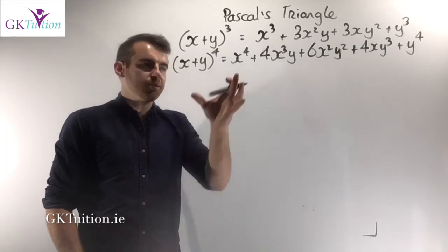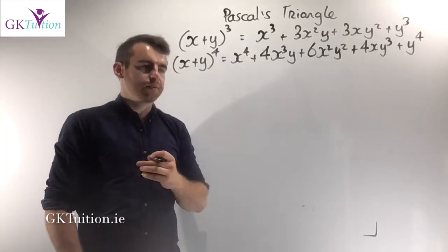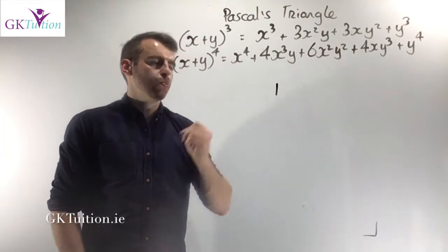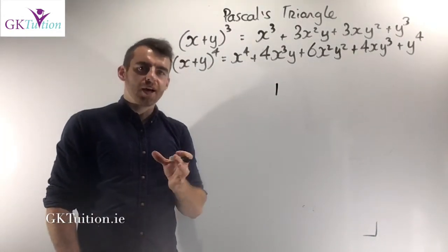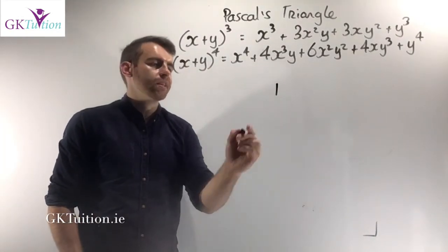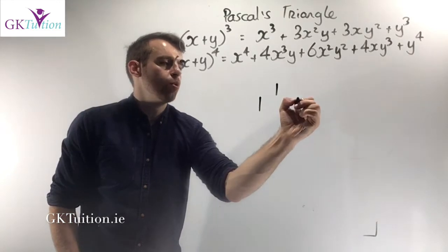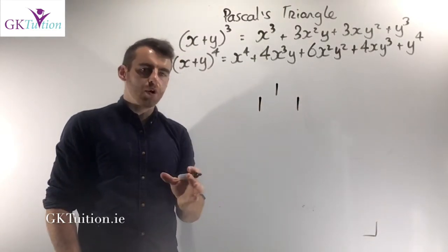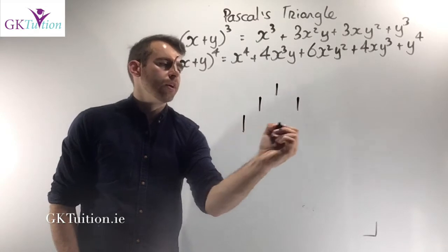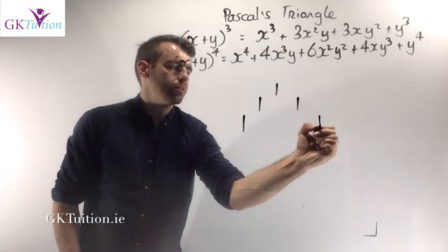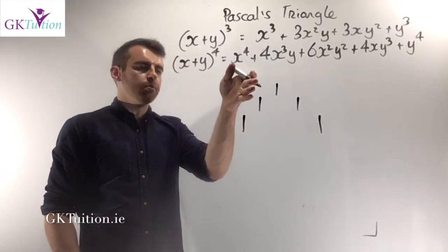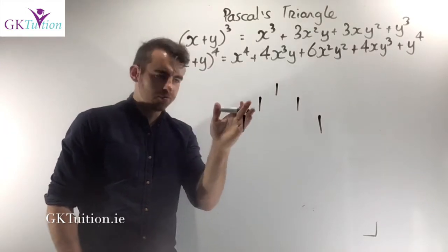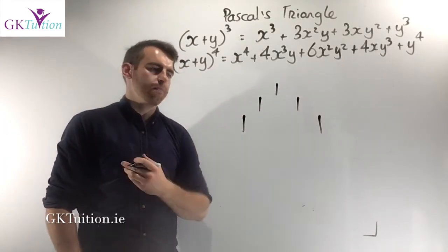Pascal's Triangle is basically just a triangle of numbers. The first row is simply the number 1. The second row has two numbers: the first number is a 1 and the last number is a 1. On every row, the first number is a 1 and the last number is a 1. The first row is one number, the second row is two numbers, the third row is three numbers, the fourth row has four numbers, and so on.